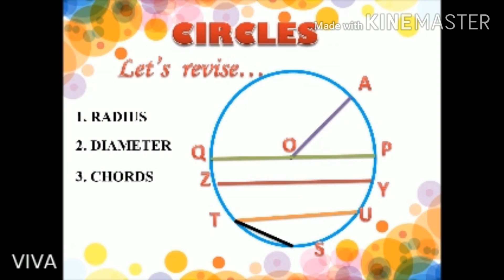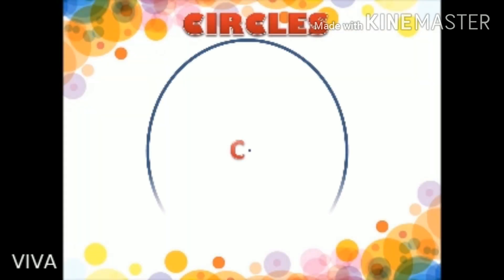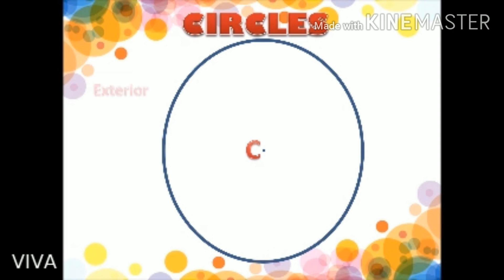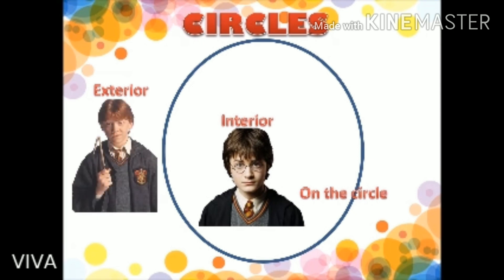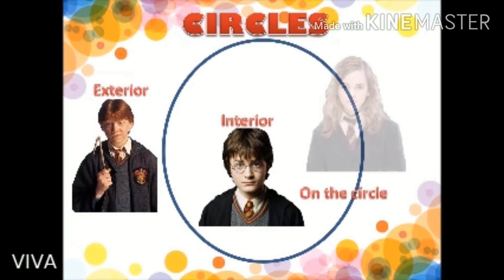A circle can be divided into three regions with respect to the plane in which it lies. The region outside the circle is the exterior of the circle. The region within the circle is the interior of the circle. The third region is on the circle itself. We can say that Harry is in the interior of the circle, Ron is in the exterior of the circle, and Hermione is on the circle itself.